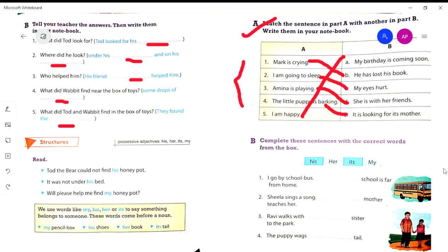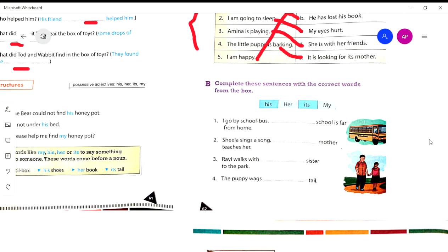Next, complete these sentences with the correct words. Fill in the blanks. I go to school by bus. My school is far from home. Sheila sings a song, her mother teaches her. Ravi walks with his sister to the park. The puppy wags its tail.